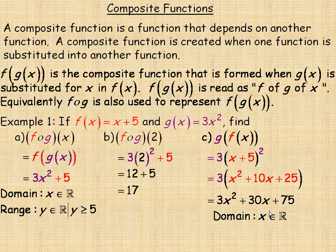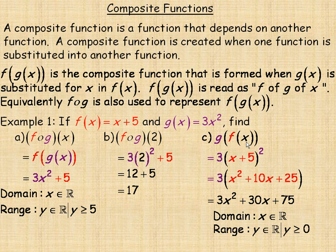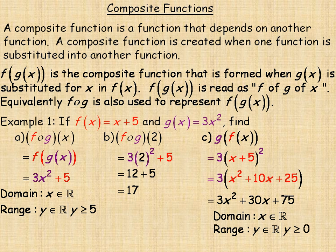The domain of g of f of x is the entire set of real numbers, since both original functions have that domain. However, there is a restriction on the range. This composition moved the parabola horizontally left five units, so the vertex is at (−5, 0). Since the parabola opens upward from there, the range is all y values greater than or equal to zero.